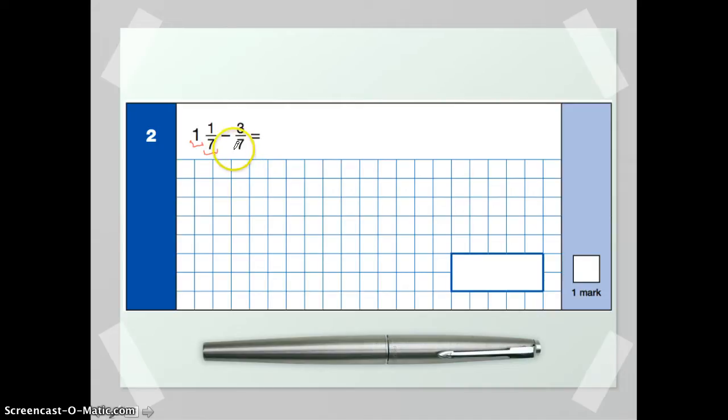And on the right side here is a second fraction. Now, the first thing to note is that underneath the fraction, the denominators are both the same. So we're both looking at sevenths in both the numbers here.